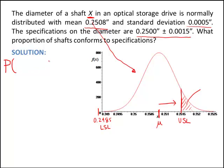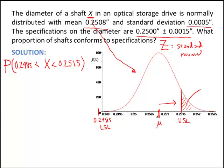We're trying to find the probability that x is between the lower specification limit, 0.2485, and the upper specification limit of 0.2515. To determine this probability, I'm going to convert these values and the random variable to a standard normal random variable. We usually reserve the letter z for a standard normal. We have a table to find areas under the curve of a standard normal, which has a mean of 0 and a standard deviation of 1.